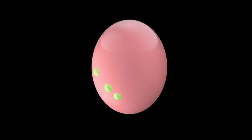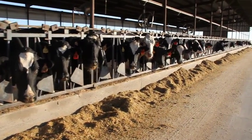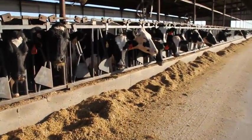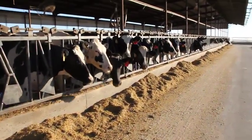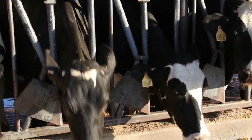However, in some cows, follicles do not grow large enough or produce enough estrogen to produce estrus and ovulation. These cows are usually thin cows and do not consume sufficient energy.